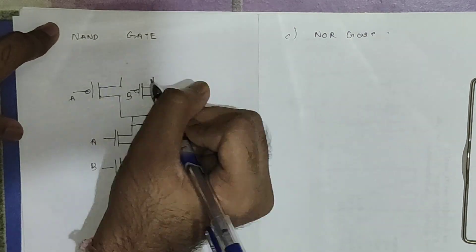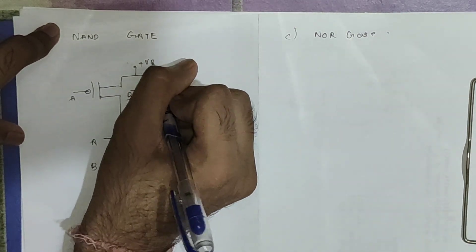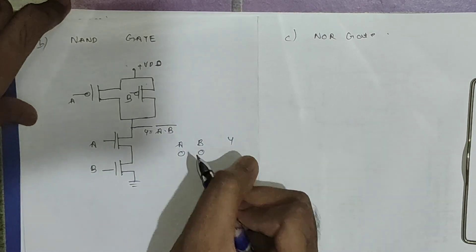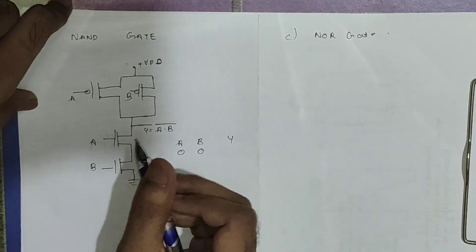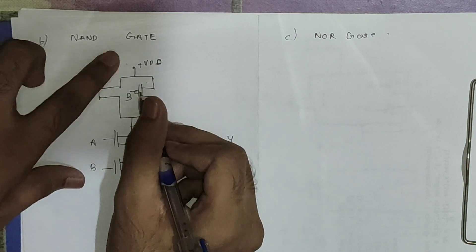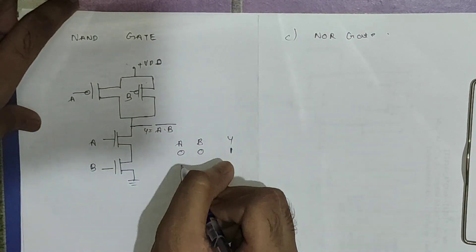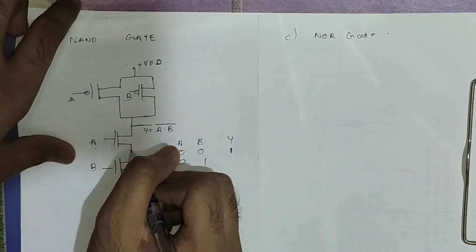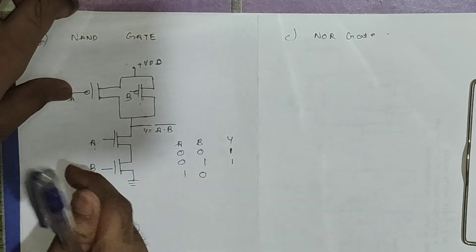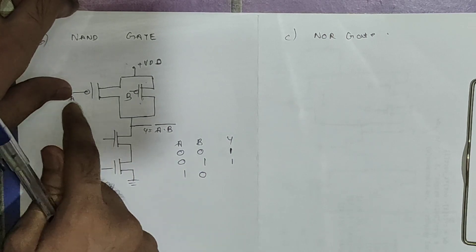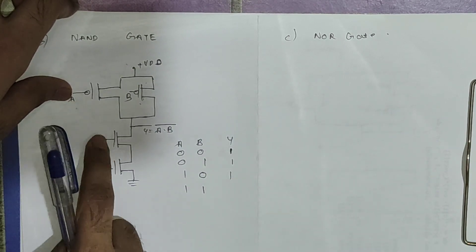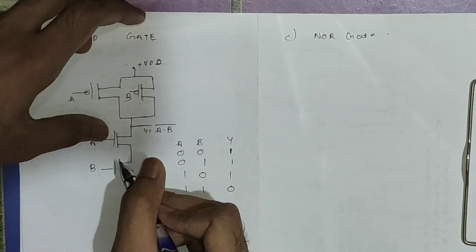We take the output as NAND (A·B bar), with PMOS connected to +VDD. Verifying with the truth table: for A=0, B=0, both NMOS are disconnected and both PMOS are short circuited, so output is connected to VDD giving 1. For A=0,B=1 or A=1,B=0, one PMOS is ON so output is 1. For A=1,B=1 both NMOS are short circuited so output is 0. This is the truth table of the NAND gate.